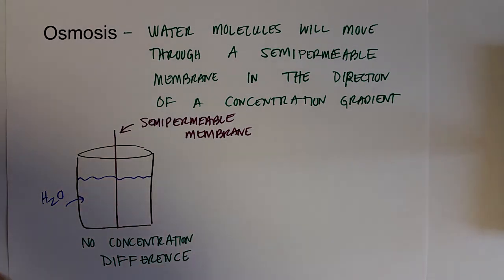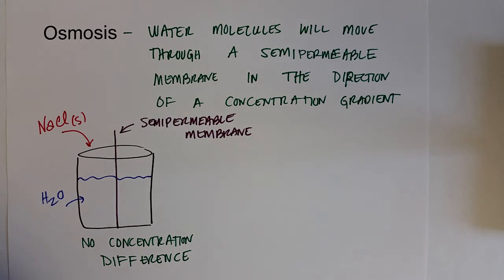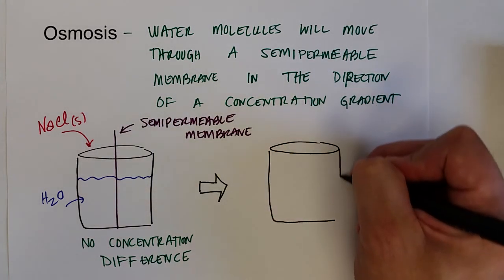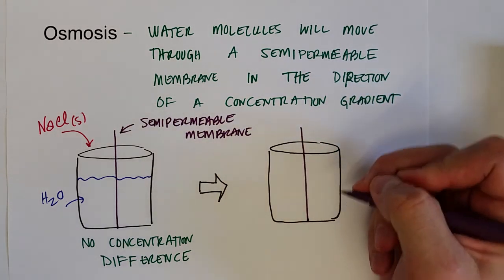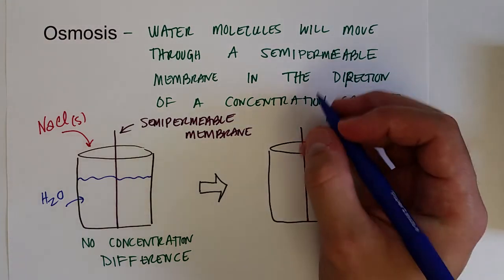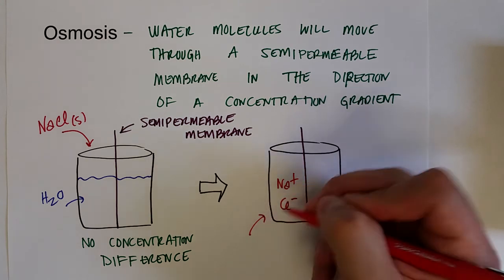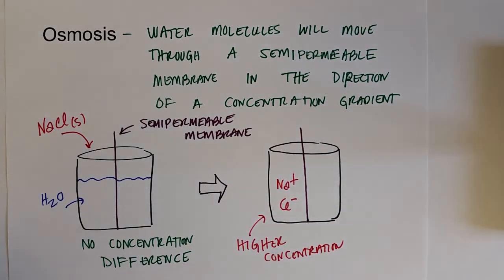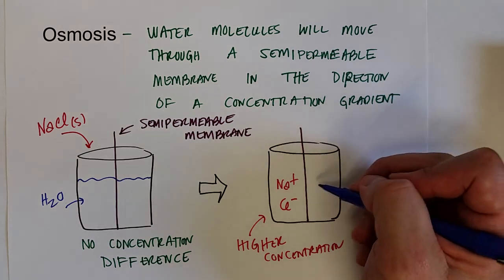Now let's throw in some sodium chloride into the left side of the beaker. Because sodium chloride cannot pass the semipermeable membrane, a concentration difference is set up. Since there will be a higher concentration of sodium ions and chloride ions on the left, water will flow across the membrane from the low concentration side to the higher side.